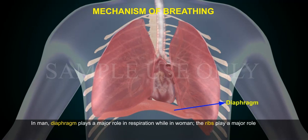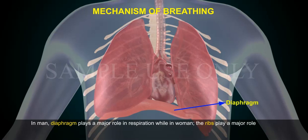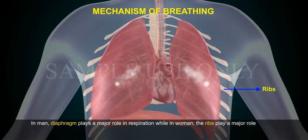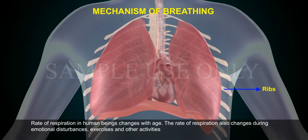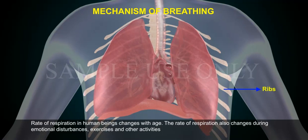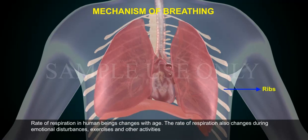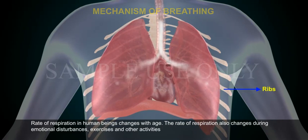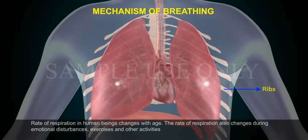In man, the diaphragm plays a major role in respiration, while in woman, the ribs play a major role. The rate of respiration in human beings changes with age, and also changes during emotional disturbances, exercises, and other activities.